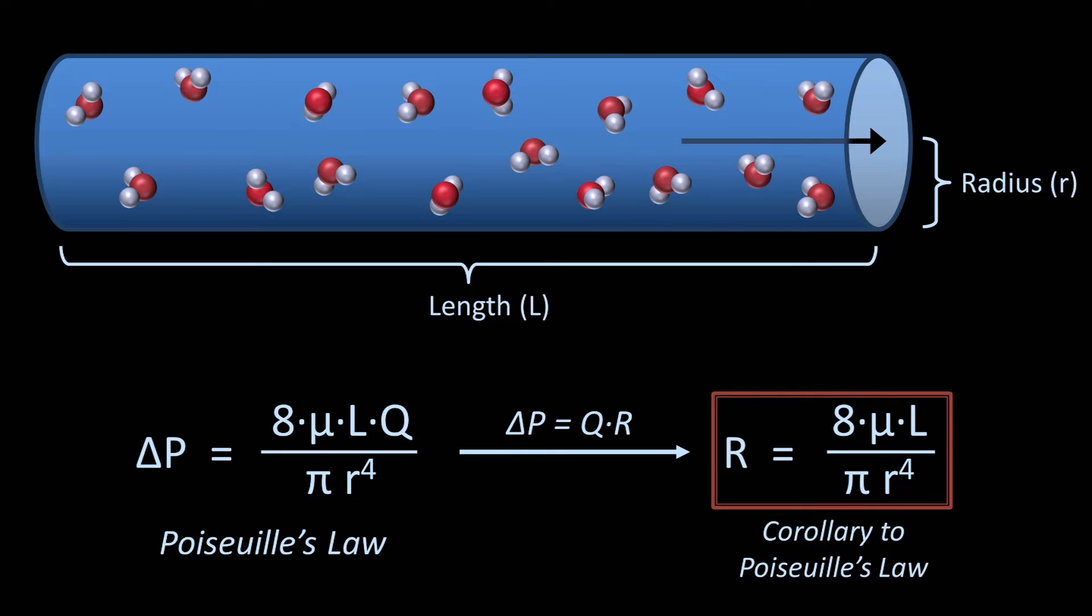While length has a modest role in determining the resistance in a tube or resistance in a blood vessel, the radius is much, much more important. Small changes in radius can result in dramatic changes in resistance.